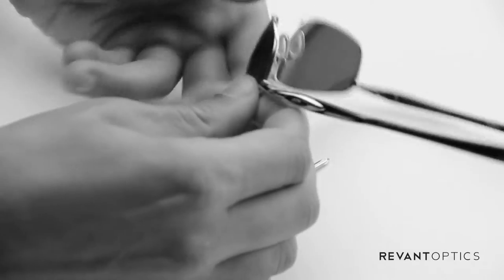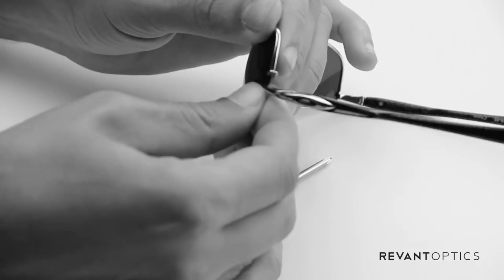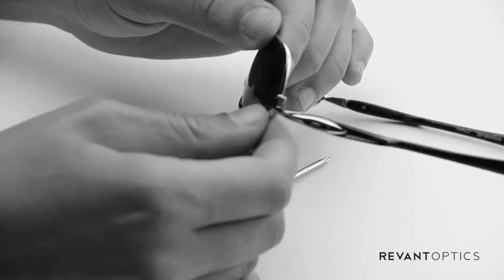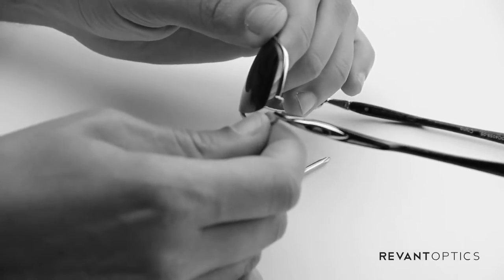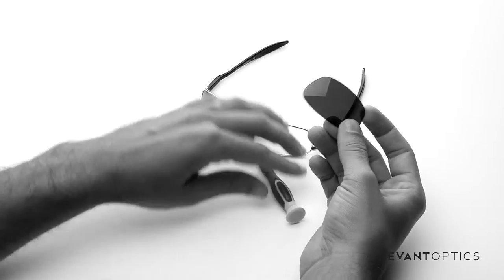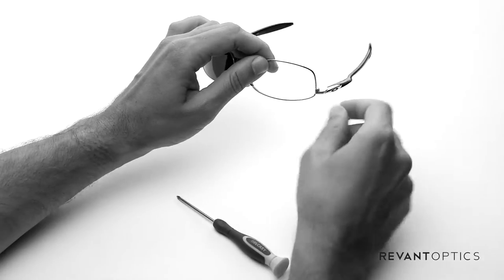And you'll see there that the frame is now coming apart near the temple, and you can just pull up slightly there. You don't want to pull up too hard because you don't want to bend the frame, and pull the lens right out. It comes out pretty easily, and then I just leave them upside down.